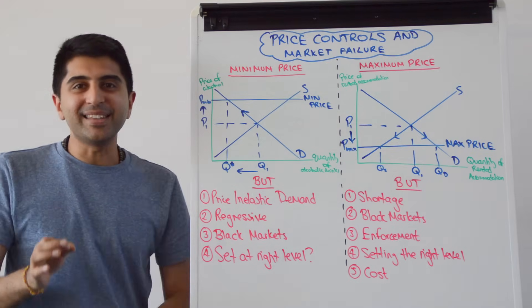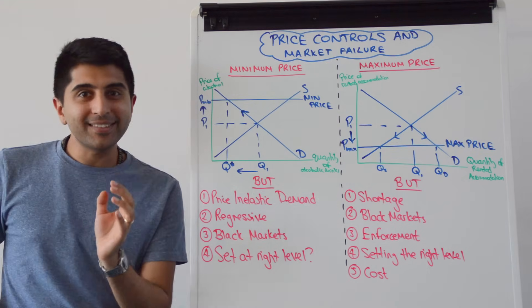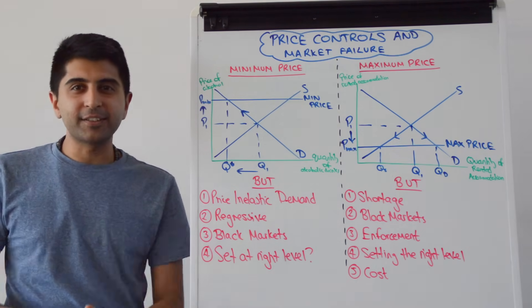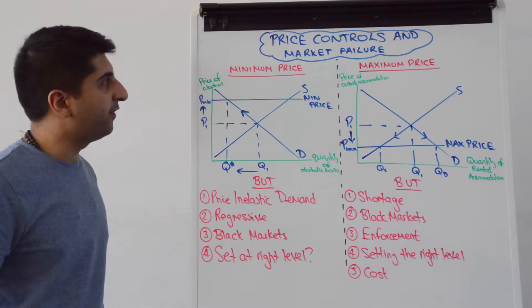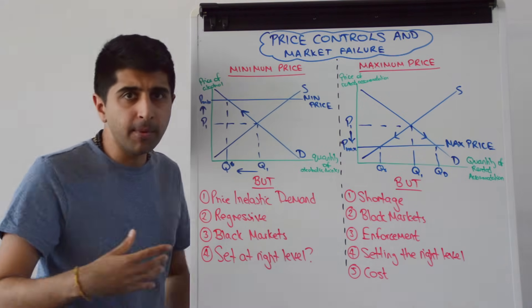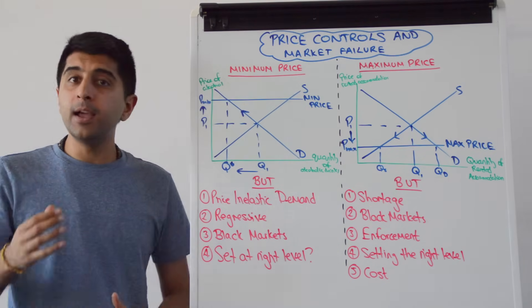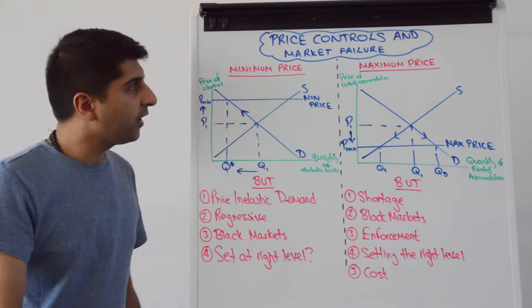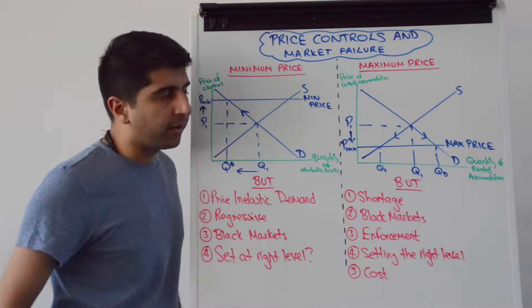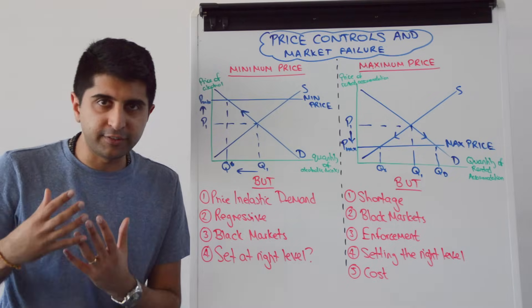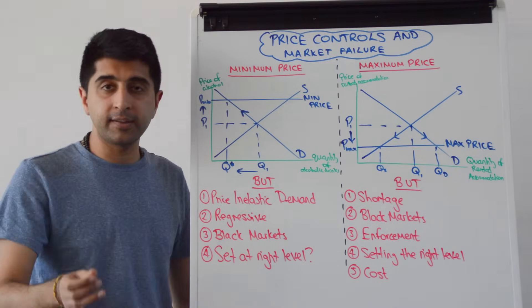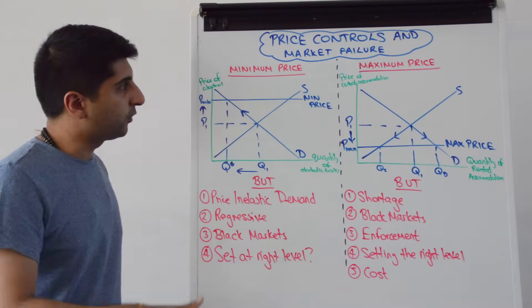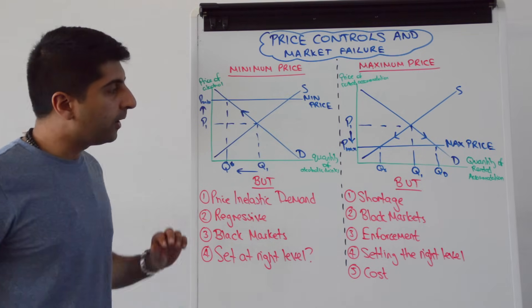In this video let's consider and discuss price controls to solve market failure. We're looking at minimum prices, i.e. price floors, and maximum prices, i.e. price ceilings. Let's focus on a minimum price first, or a price floor.